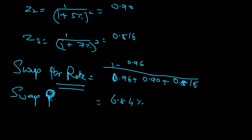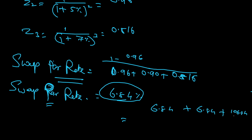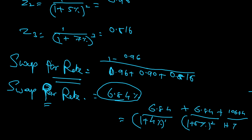Why do I call it the par rate? Imagine this is a three-year bond and 6.84% is the coupon rate. You receive 6.84 in year one, 6.84 in year two, and 106.84 in year three — assuming you invested 100 initially. If I discount these cash flows using the spot rates — four percent for year one, five percent for year two, and seven percent for year three — it will give me exactly 100. That's why it is called the par rate.